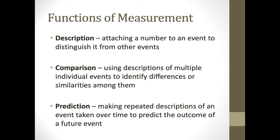When we measure behavior, it provides us with three pieces of information. It provides a description — essentially by attaching a number to the event, it distinguishes it from other events, so we can see a behavior occur in time or occur multiple times through an observation.